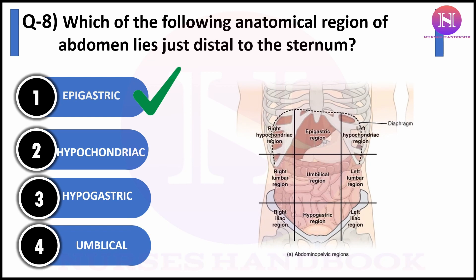As shown in the picture, the abdominopelvic cavity is anatomically divided into nine parts. In the first row: right hypochondriac, middle epigastric, and left hypochondriac regions. The second row: right lumbar, middle umbilical, and left lumbar regions.